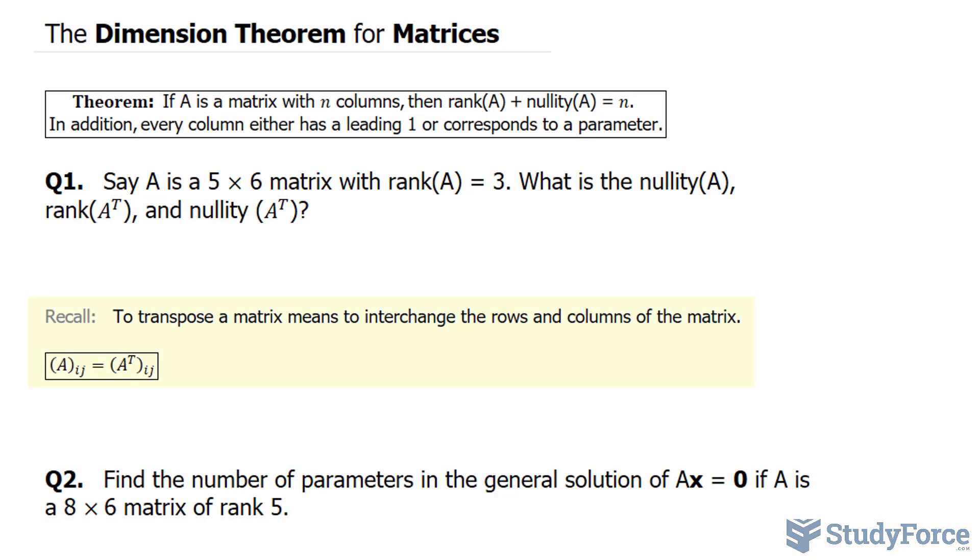In case you forgot, the transpose of a matrix means to interchange the rows and the columns of the matrix. In our case here, it's 5 by 6, so the transpose will be 6 by 5.